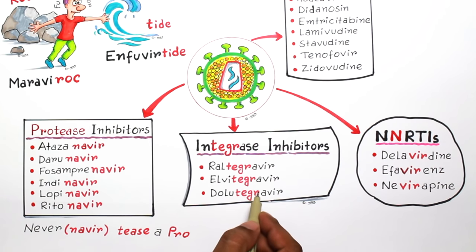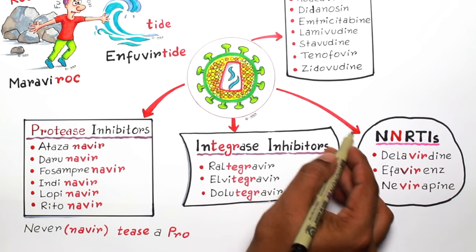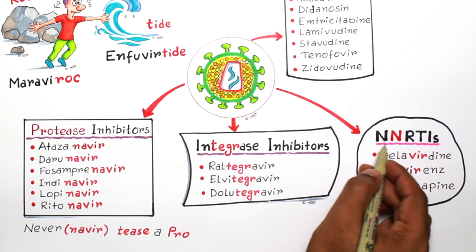The next group is integrase inhibitors. Here you just have to remember these four letters: E, E, G, R, which are common for all the drugs present in this group.